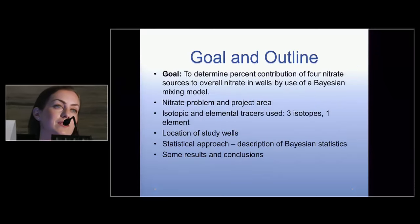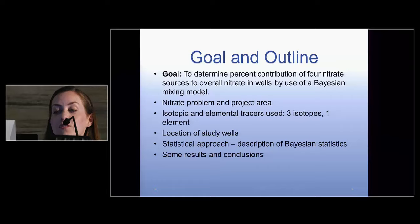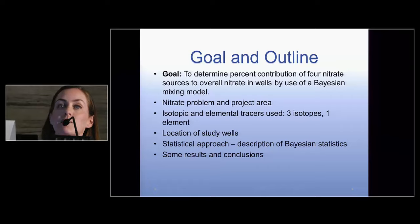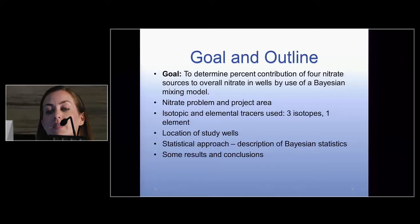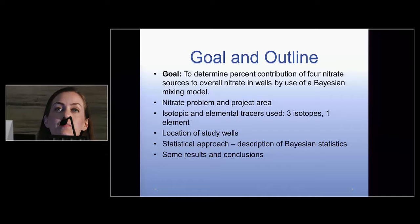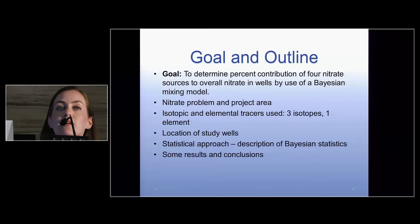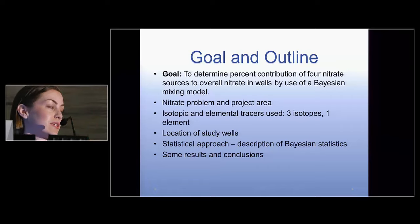The goal of this study was to determine the percent contribution of four nitrate sources to overall nitrate in private domestic wells using a statistical Bayesian mixing model. I'll go over the general nitrate problem in the project area, the isotopic and elemental tracers we used — three isotopes and one element — the location of our study wells, and the statistical approach, along with some quick results and conclusions.